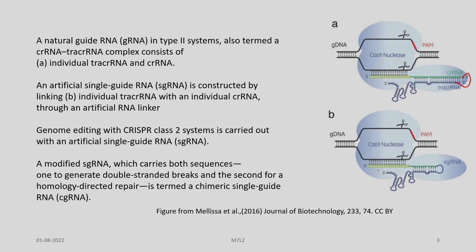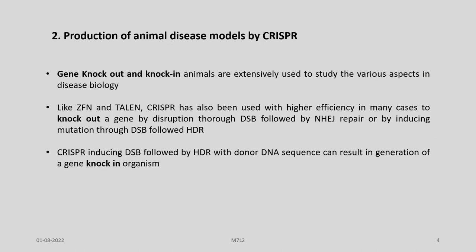The artificial guide RNA is constructed by linking individual tracer RNA with an individual crRNA through an artificial RNA linker. Genome editing with the CRISPR-Cas9 type II system is carried out with this artificial single guide RNA system. This modified RNA carries both sequences — one to generate double-stranded breaks and the second for homology directed repair — and is termed chimeric single guide RNA or CG-RNA.